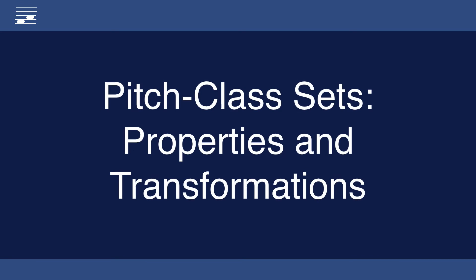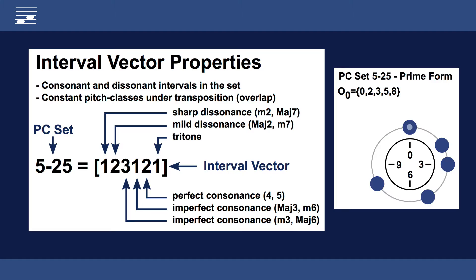Next let's discuss pitch class set properties and transformations. On the right we see the example set 5-25 in the pitch disk diagram. The root is C corresponding to pitch class number 0 and the five pitches are displayed as blue circles representing the prime form.